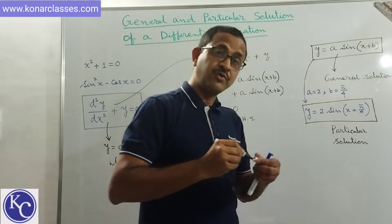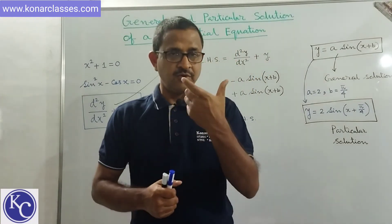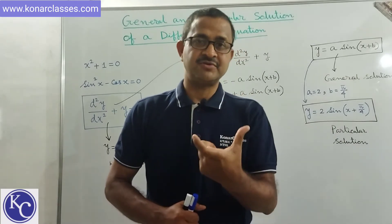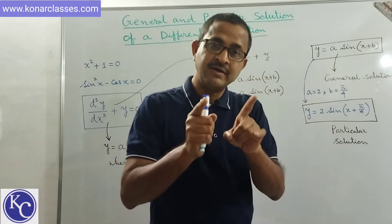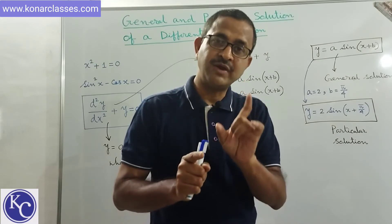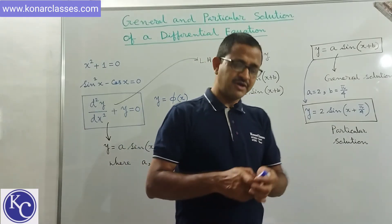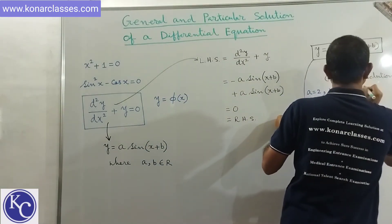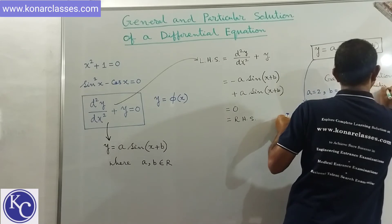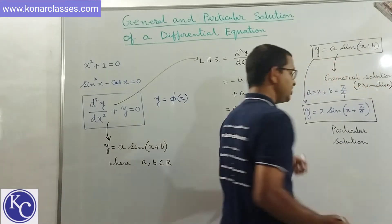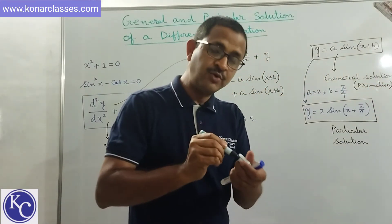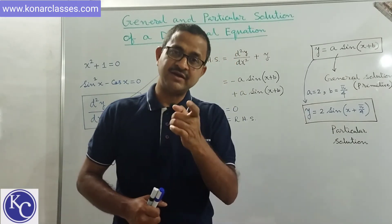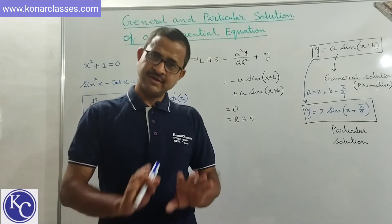So dear students, what we have learned is that if a solution contains parameters like a and b, it is known as a general solution — also called a primitive. And if we apply specific values to these parameters, whatever we get is known as a particular solution.